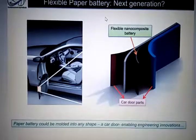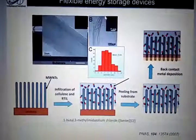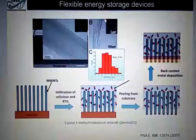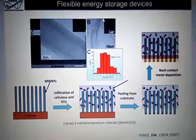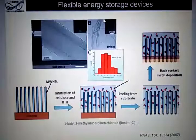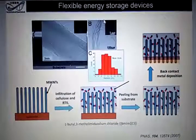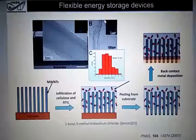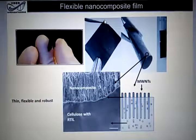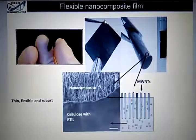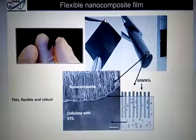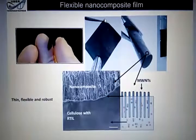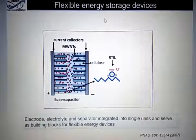In one of our works, we start with a multiwalled carbon nanotube bundle and infiltrate an ionic liquid-based electrolyte. In the ionic liquid, I also add some cellulose — cellulose being the main content of paper. Dissolving cellulose powder in ionic liquid and infiltrating it onto the carbon nanotube bundle, I can peel off a completely flexible film. This film contains the electrode and the ionic liquid electrolyte already embedded in it, with a layer of cellulose on top acting as an insulating layer.